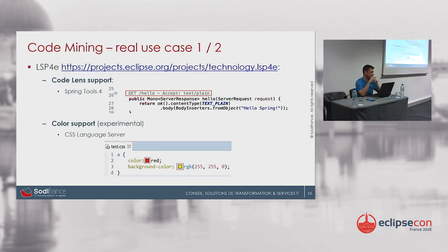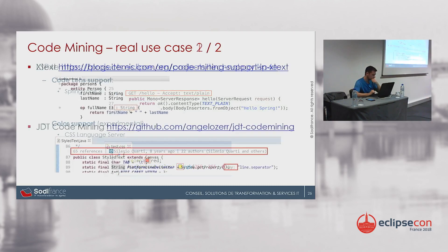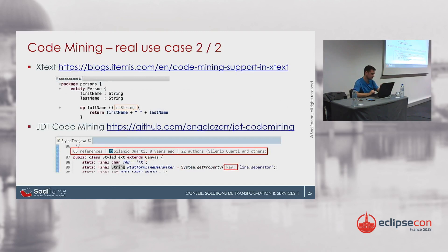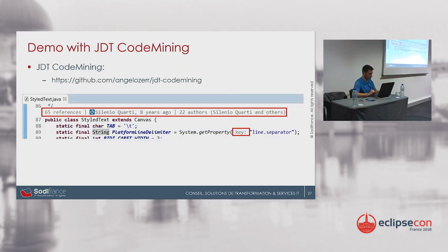Code mining is used in real use cases in several projects: Language Server Protocol for Eclipse (LSP4E) for code launch support, Spring Tools 4 language server in action, and color support as an experimental feature for the CSS language server. Xtext also integrates code mining. And then there is JDT code mining.